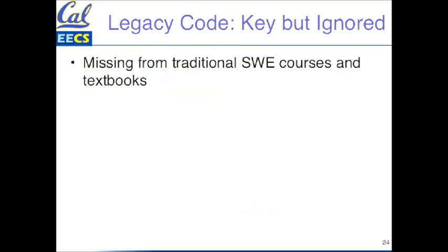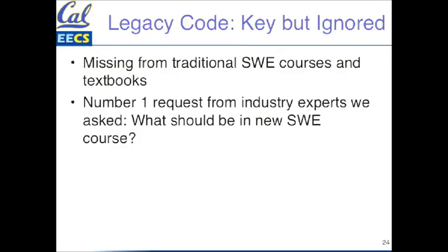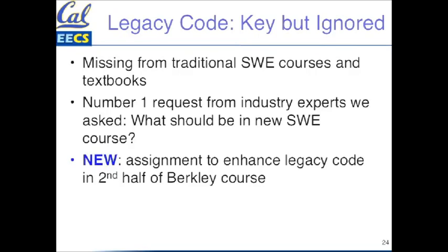One more thing about legacy code: when Armando and I looked, nobody teaches about legacy code. We can't find it in textbooks, and no other course descriptions cover it. When we were figuring out how to redo software education in this new model, we went to friends in industry at lots of leading companies. The first three people we talked to said you're all going to have to deal with legacy code. The fifth, sixth, and seventh people all said the same thing. The number one priority at every company — Google, Microsoft, Amazon — you need to deal with poorly documented code. That's what you need to teach them. Their second choice differed, but the first choice was all the same.